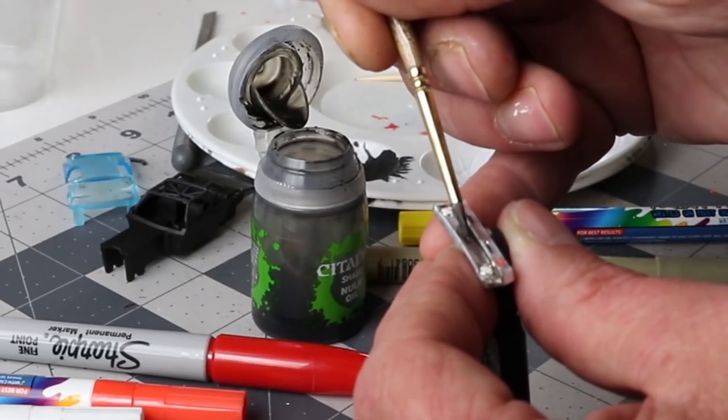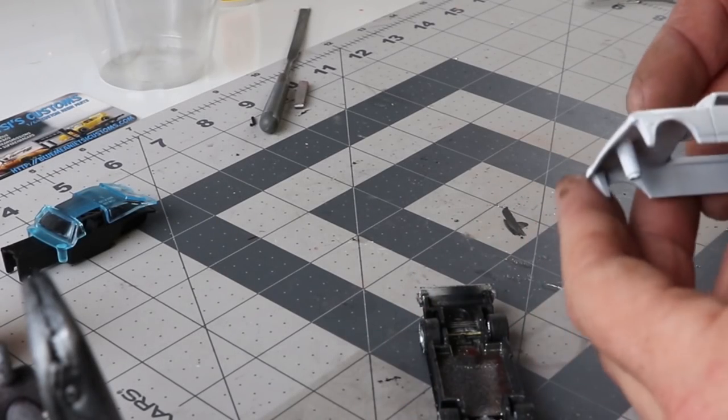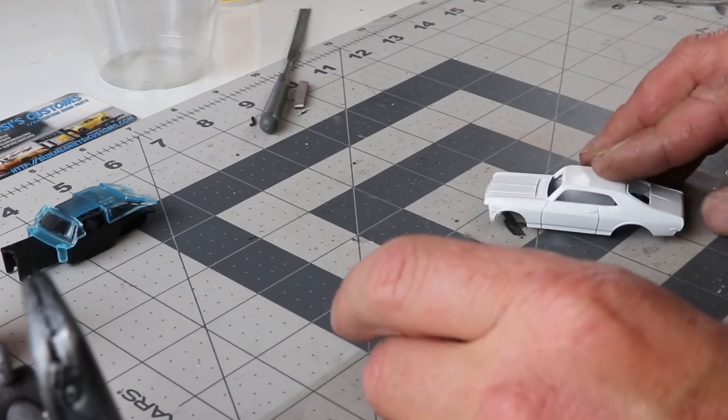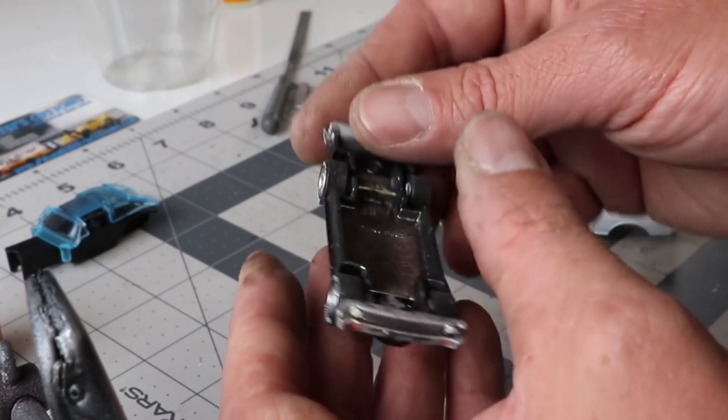And then I'll put a little black wash on the grill areas and the side markers just to add a little bit of depth to it. It's a little bit of realism. Again, it's the small details. A bunch of small details don't seem like a big deal, but when all put together, it makes a big difference. So, overall, so far, it's looking pretty good.